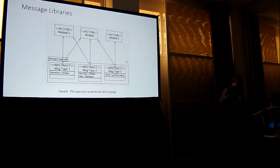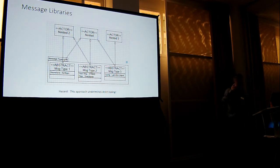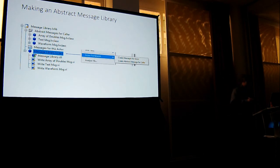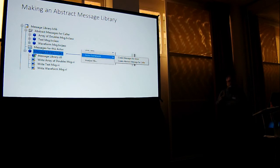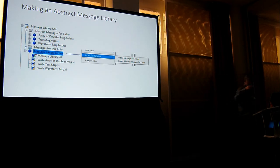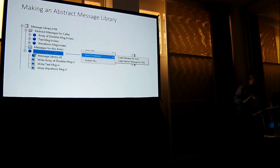It would be terribly handy to have a message library where I could right-click and create an abstract message. I was thinking about doing it but didn't get a chance. In the meantime, here's an idea: make a dummy actor, put it in a library, you'll never use it, but it'll give you a hook into the tools so you can still use the scripting tools to make your abstracts easily. I'd love to see the tools evolve. This might be a good workaround for you.